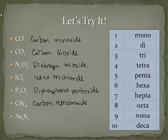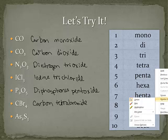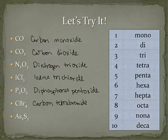Next we have two arsenic atoms and three sulfur atoms. Arsenic sits on the stair steps, so it is a metalloid — but metalloids can be part of covalent molecules, so arsenic is fine. We have two arsenic atoms, so we write diarsenic. Three sulfur atoms gives us tri-, and we need the -ide ending, so it becomes sulfide: diarsenic trisulfide.